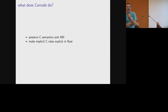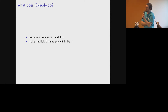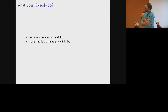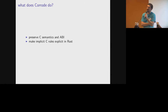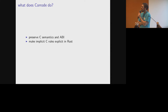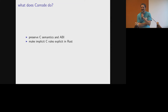So what does Corrode do? Corrode is a tool for automatically translating C source programs into Rust source code. In the process it's a semantics-preserving translation. It has a nice side effect of making things that are implicit about C explicit in the Rust source. When you run Corrode on C source you learn some things about what your C actually meant that you may not have realized.